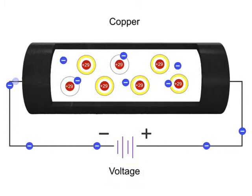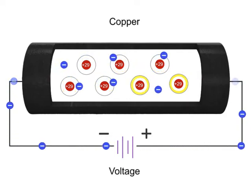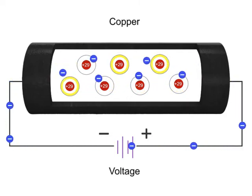This movement, or flow, of electrons in one direction is called electron current flow, or just current.